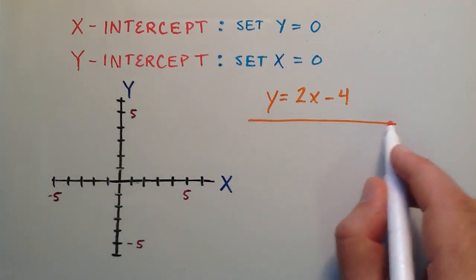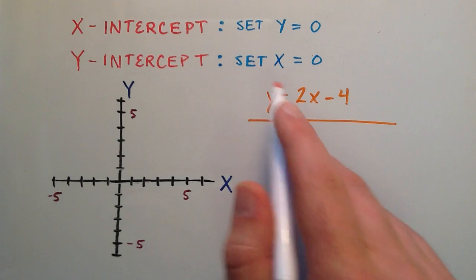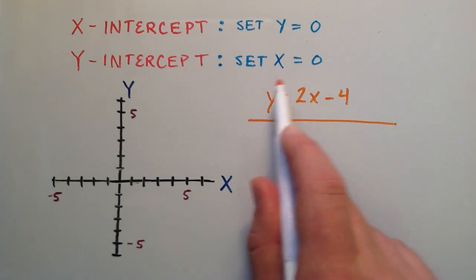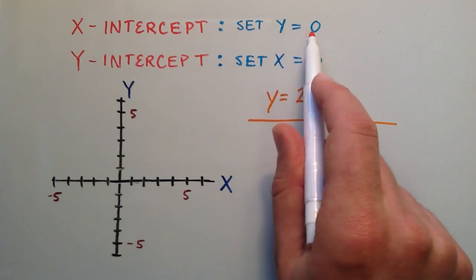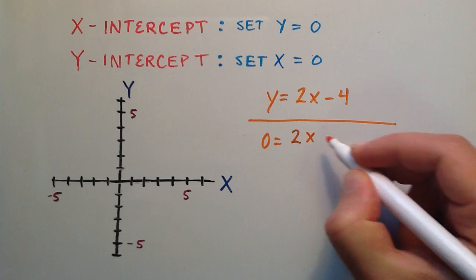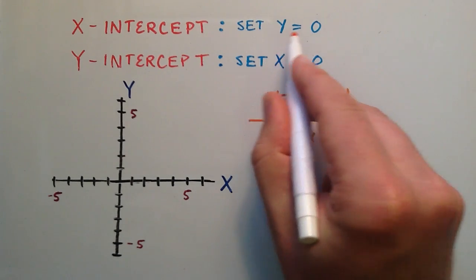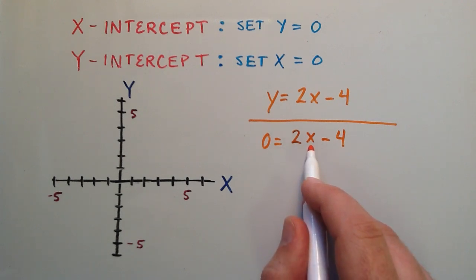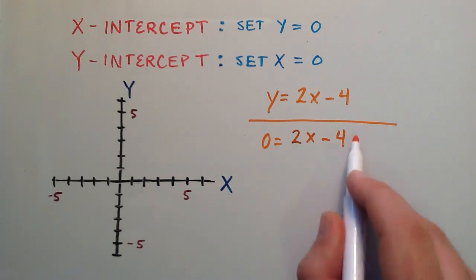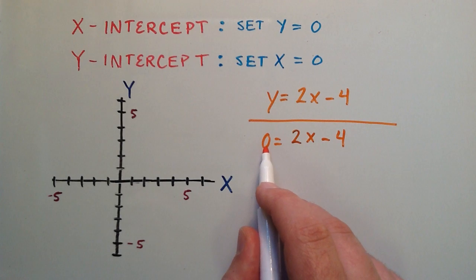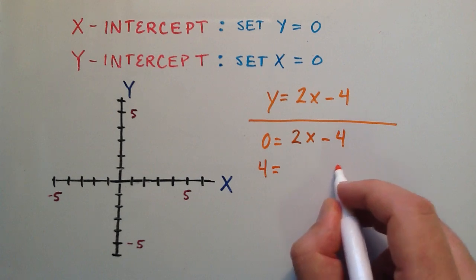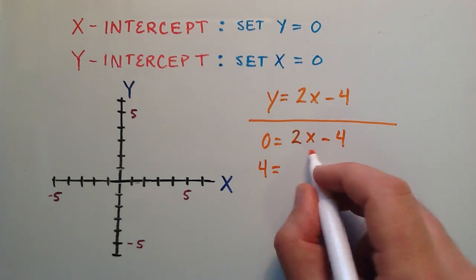Let's go ahead and find the x intercept of our line. To find the x intercept, we set y equal to 0. So we rewrite the equation, but instead of y we write 0: 0 is equal to 2x minus 4. Now we solve for x. We add 4 to both sides to get rid of the constant term. 0 plus 4 is 4, and negative 4 plus positive 4 equals 0, so we're left with 2x on the right.